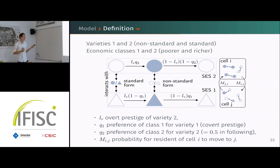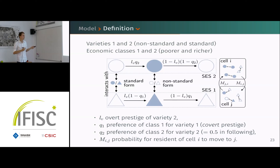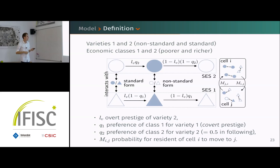The first parameter is lv — the overt prestige of variety two, the standard language. The difference with the model before is that here agents have preferences for one variety or the other depending on their underlying socioeconomic class, which does not vary in time.